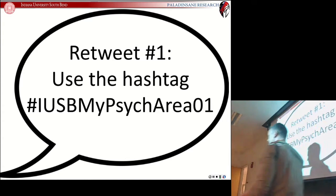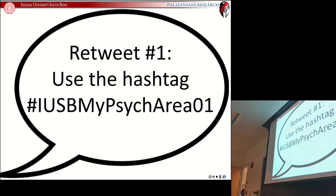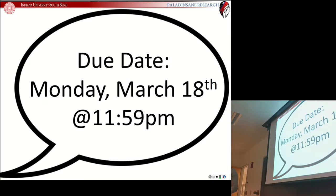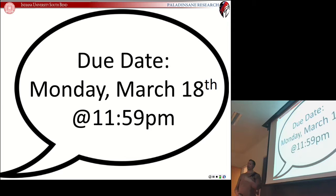Choose any three articles, pick a common theme, and use the following hashtags to keep track: IUSBMyPsychArea01 for tweet one, IUSBMyPsychArea02 for tweet two, and IUSBMyPsychArea03 for tweet three. The due date is Monday, March 18th. Anytime over the next week and a half, as you're working on your advanced lab project, if you find something particularly interesting online or from your previous articles, feel free to retweet those and use the hashtag so I can track it. That is social media development part six.